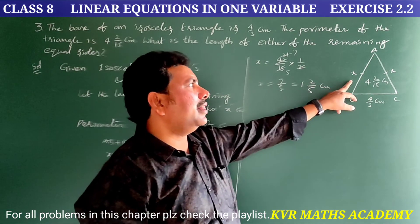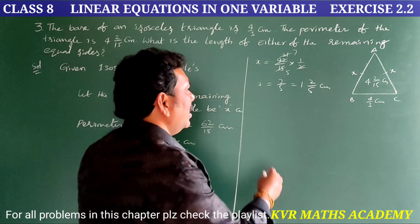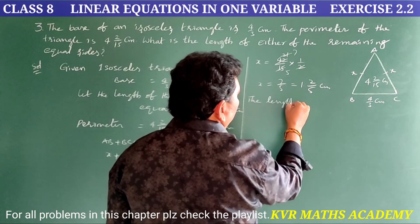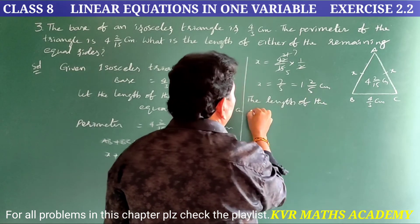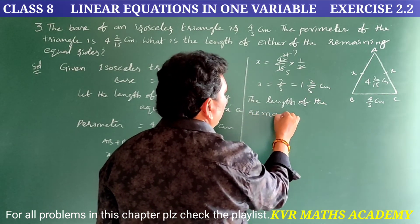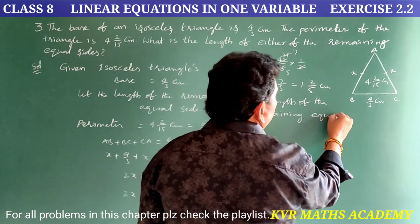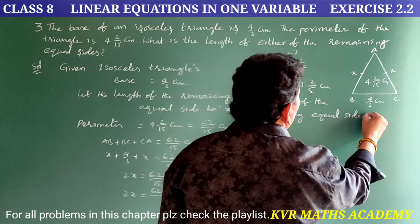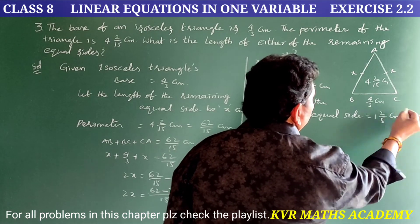Which means the length of the remaining equal side is equal to 7/5 centimeters, which can also be written as 1 and 2/5 centimeters.